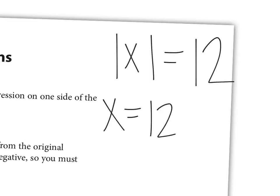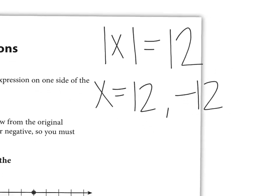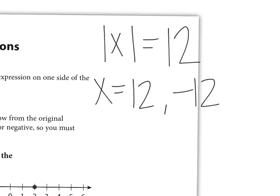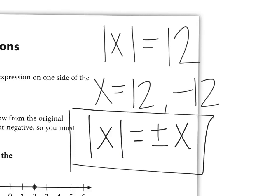It's 12, because the absolute value of 12 is 12. It could also be negative 12. Because when we say the absolute value of x is equal to something, it is always equal to the positive and negative form of that number.